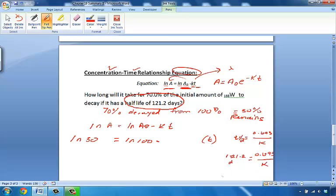That equals 0.693 over K. And to solve for K, we divide 0.693 by 121.2 days. So, we attain 5.7 times 10 to the minus 3 inverse days. So, that is our K.